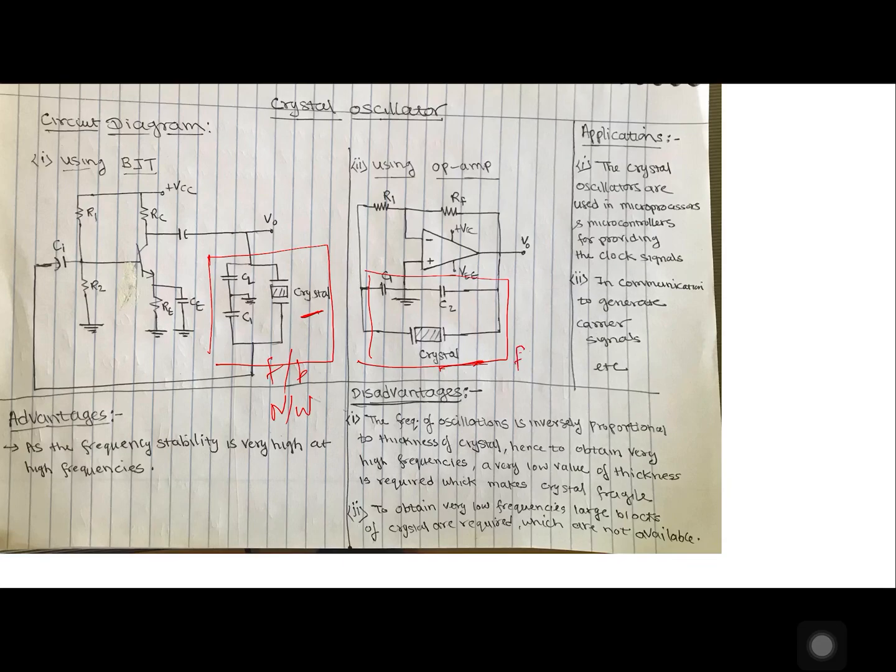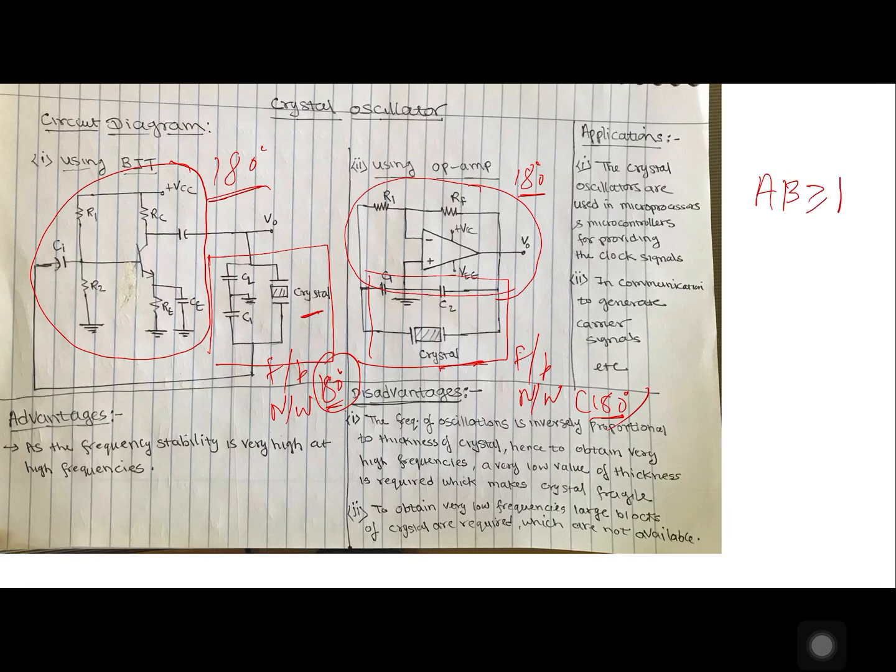Crystal with mounting capacitor forms your feedback network. And this feedback network will provide a phase shift of 180 degree. And remaining 180 degree of phase shift will be provided by inverting amplifiers. It is CE amplifier. It provides 180 degree or inverting amplifier will provide 180 degree. So 180 plus 180 will give you 360. So total phase shift is 360. One of the Barkhausen's criteria is fulfilled.